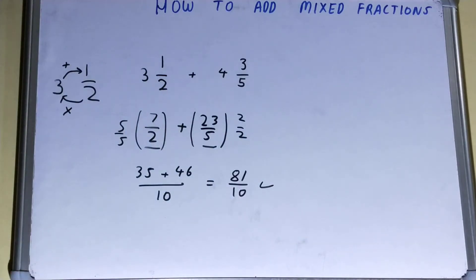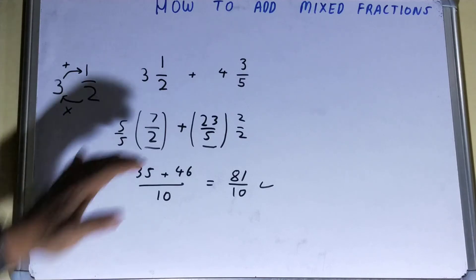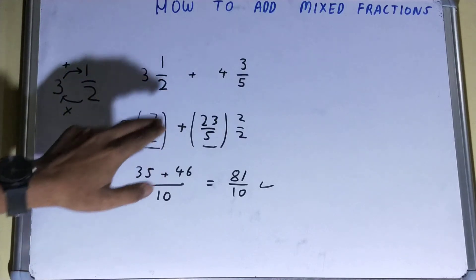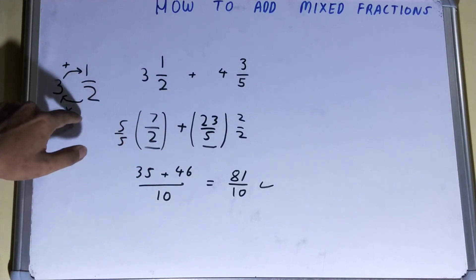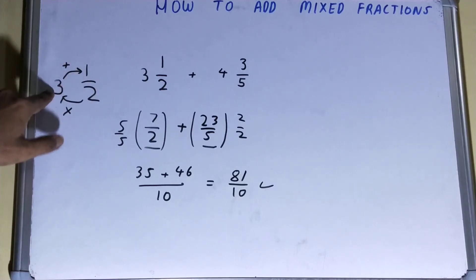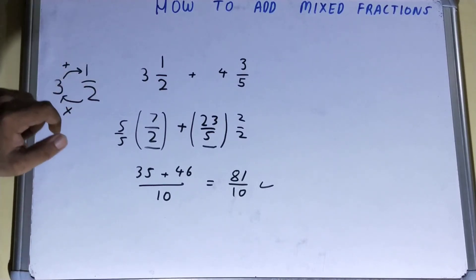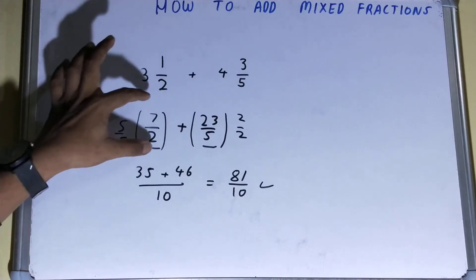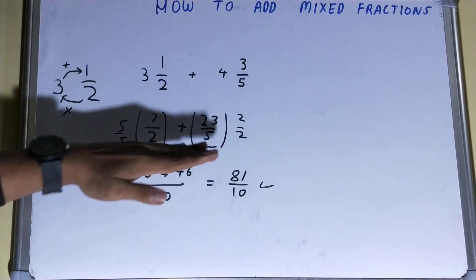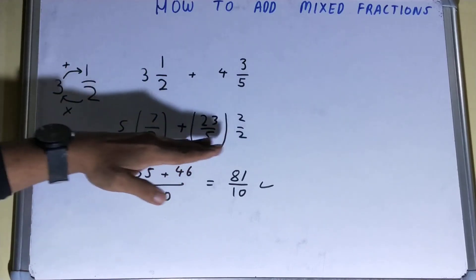So for adding two mixed fractions, what you need to do is first you need to convert it into a proper fraction. Okay, how we'll be doing? Multiply the denominator with the whole, okay, and then add the numerator. So that is how we can convert it into a proper fraction. Then you need to balance the denominator, okay?